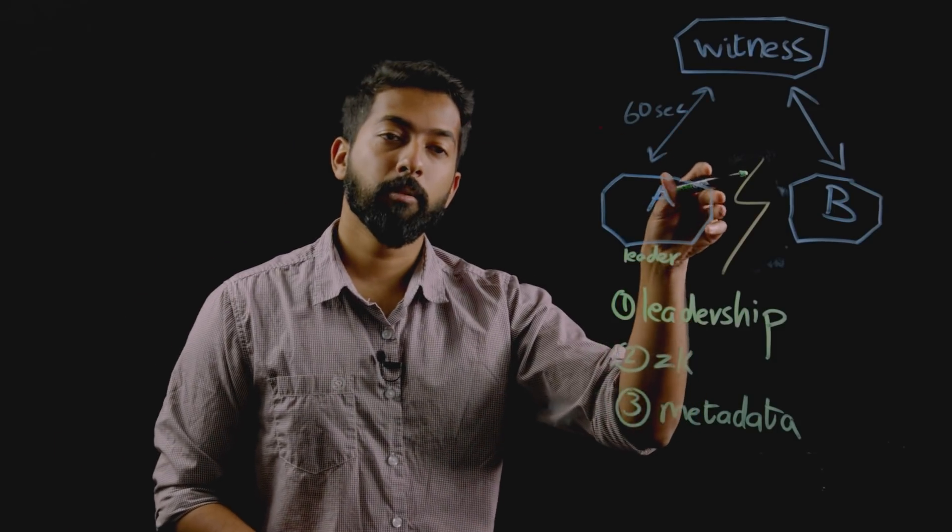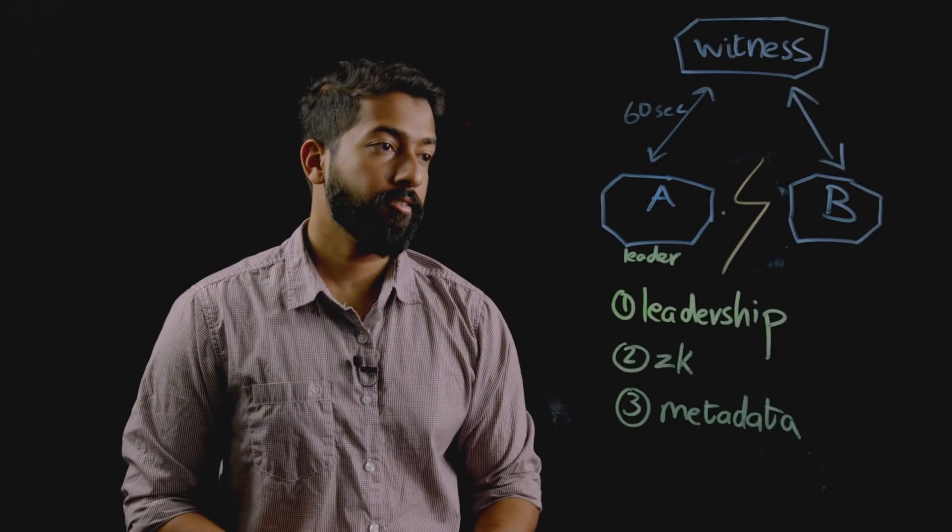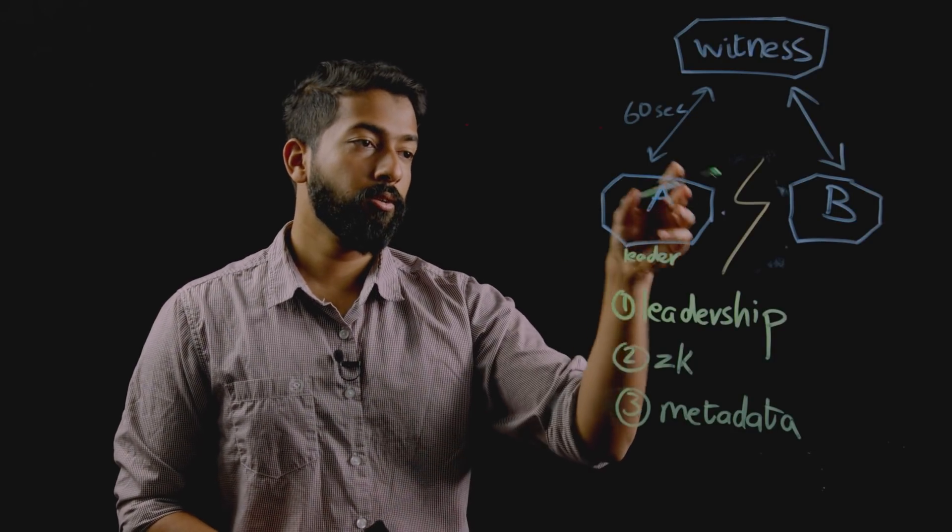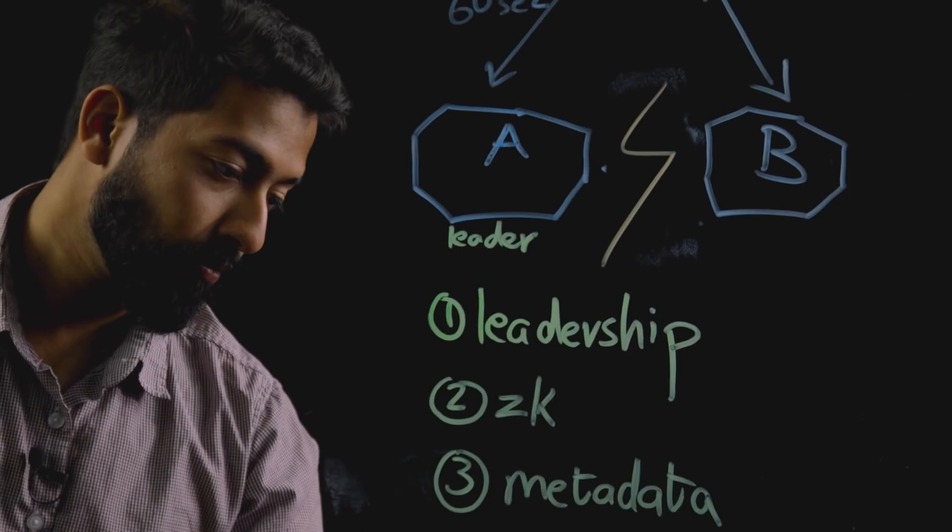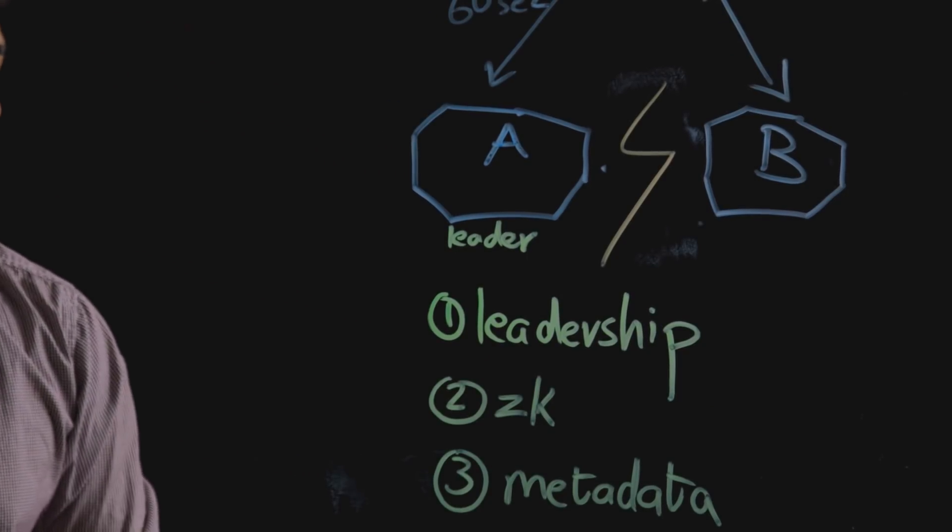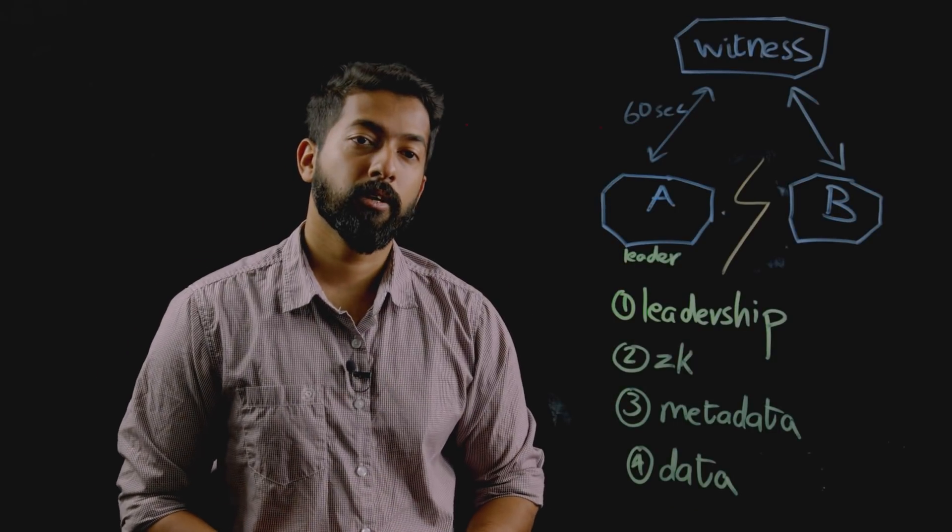Once the metadata has all been migrated to node A, next, Curator would migrate all the actual data to the local disks in node A. And then the transition to a single node is complete.